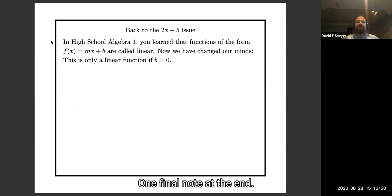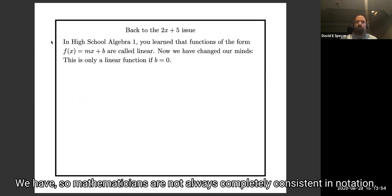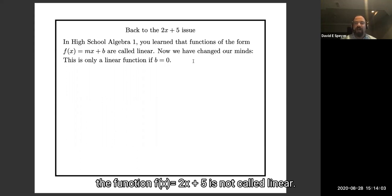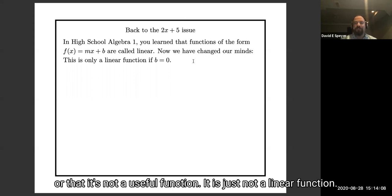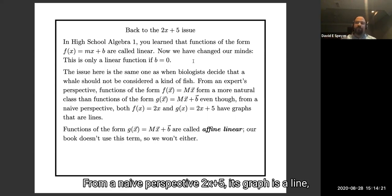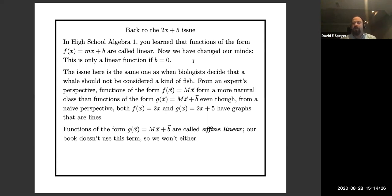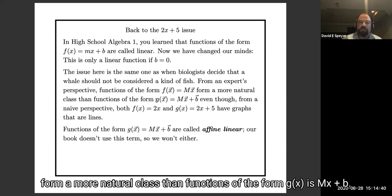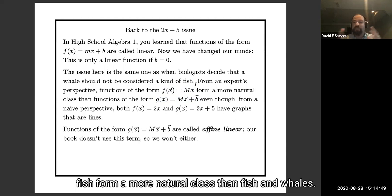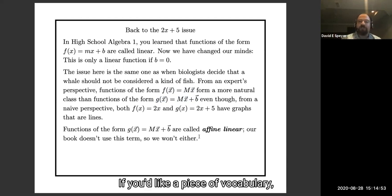Okay, one final note at the end. So mathematicians are not always completely consistent in notation. For this course, and for most courses you'll take from now on, the function f of x equals 2x plus 5 is not called linear. That doesn't mean we don't care about it or it's not a useful function. It is just not a linear function. Here's an analogy. From a naive perspective, 2x plus 5, its graph is a line, you might think, well, that seems pretty linear. But from a sophisticated perspective, functions of the form f of x equals mx, where I just multiply by a matrix, form a more natural class than functions of the form g of x is mx plus b. Just like to a biologist who understands ocean life, fish form a more natural class than fish and whales. If you'd like a piece of vocabulary, one that we're not going to use much, functions where you multiply by a matrix and add on a vector afterwards are called affine linear functions.